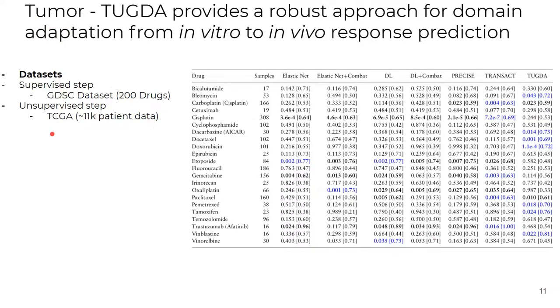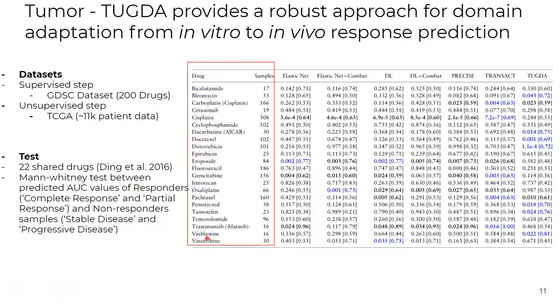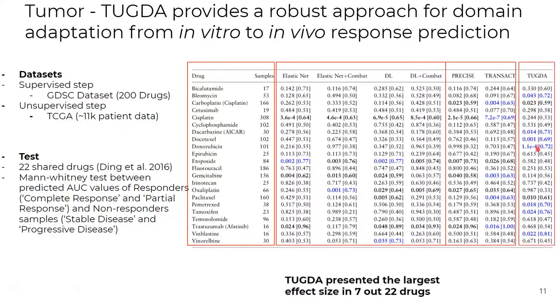So, when transferring from cell lines to patients, we used the TCGA dataset in the unsupervised step. We tested model performance in 22 shared drugs between GDSC and TCGA using the labeled data created by Ding et al. from 2016. We report the Mann-Whitney U test between predicted AUC values of responders and non-responder samples. The baselines are the same as in the PDX evaluation with methods not adapted and methods doing adaptation. Here, TUGDA presents 9 significant associations and the largest effect size in 7 out of 22 drugs.